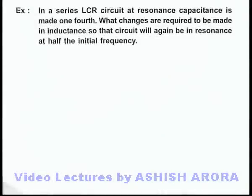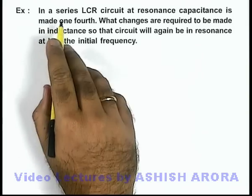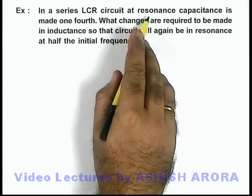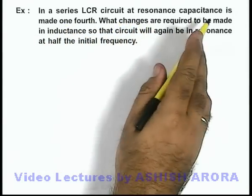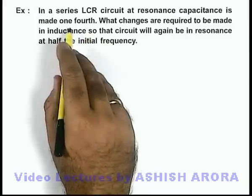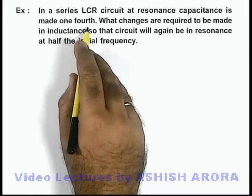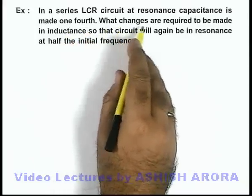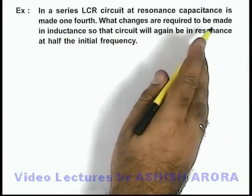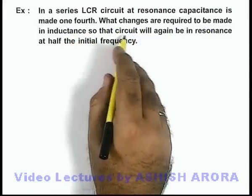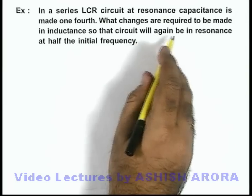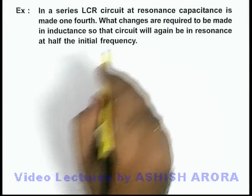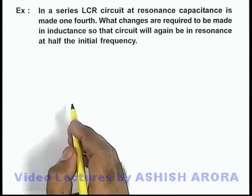In this example, we are given that in a series LCR circuit at resonance, capacitance is made 1/4th. We are asked what changes are required to be made in inductance so that the circuit will again be in resonance at half the initial frequency.